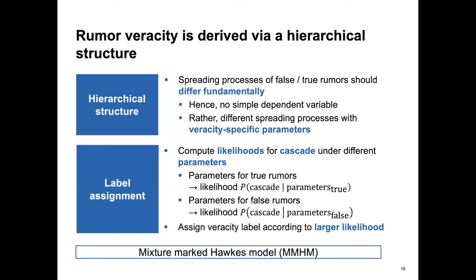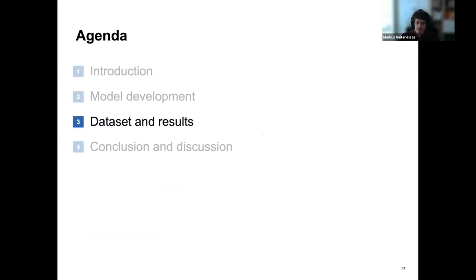To tie this into veracity detection: we already know that diffusion processes differ between false and true rumors. We take the same model and fit it once on only true cascades and once on only false cascades. For a new cascade to be tested, we run it through both models, check which gives a higher likelihood, and assign the veracity label based on the higher likelihood. That is how we go from the model to the predicted veracity label.